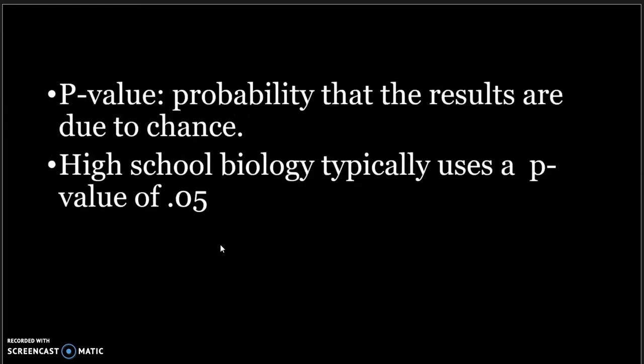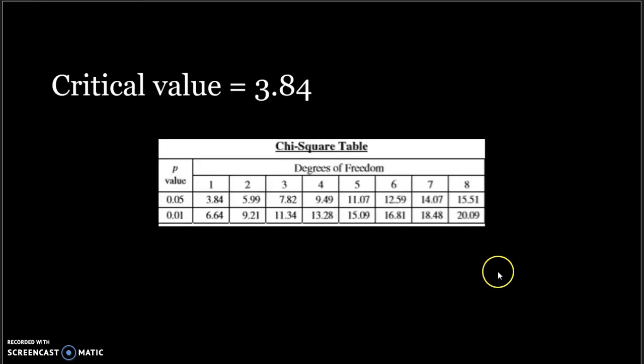The p-value is the probability that the results could be due to chance. There's a lot that can be said about p-values and their use in scientific statistical tests, but we're not going to go into it. In this context, we are going to use a p-value of 0.05, which is typically what will be used in most high school biology situations. Looking at the chi-squared table, the one degree of freedom column, the 0.05 p-value row gives us a critical value of 3.84.